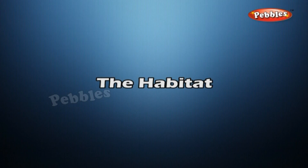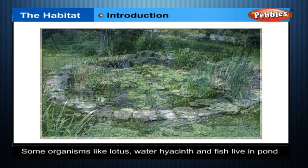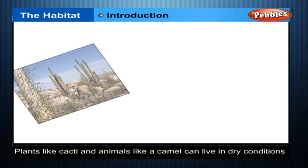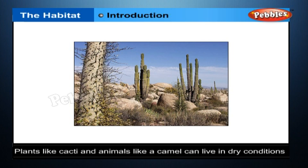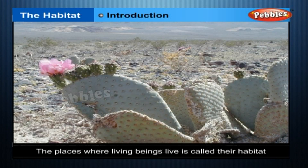The Habitat. Some organisms like lotus, water hyacinth and fish live in a pond, that is water. Plants like cacti and animals like a camel can live in dry conditions, in deserts. Still other organisms live in a forest or in soil or in burrows. The places where living beings live is called their habitat.